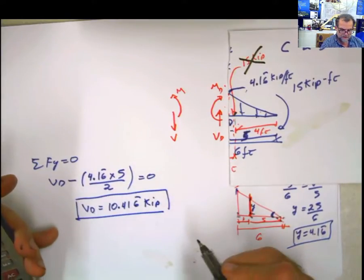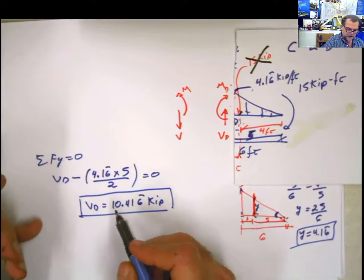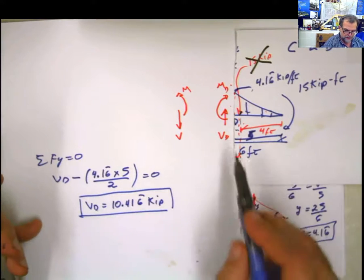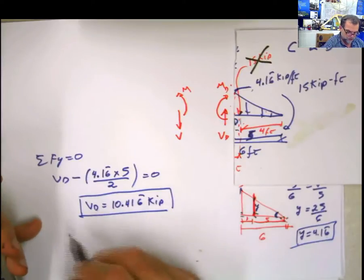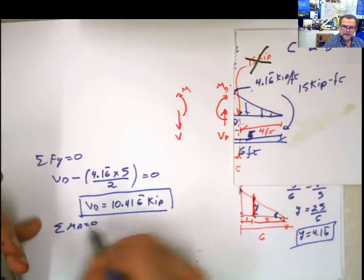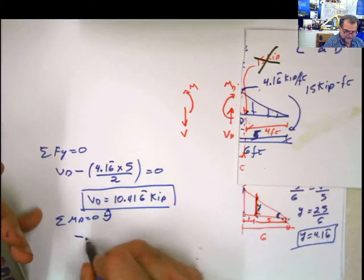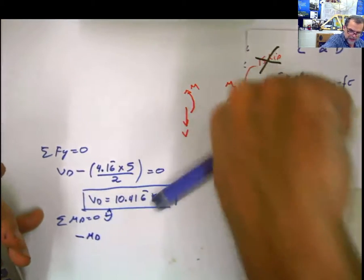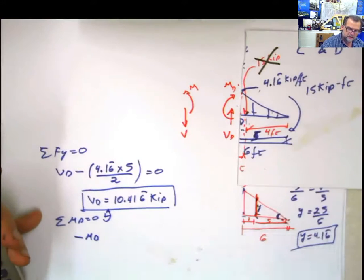And if I want to calculate the moment, then I do the same thing. I said the moment is going to be summation of moments at D equals 0. Then I have negative Md because it's acting like that. This Md here.